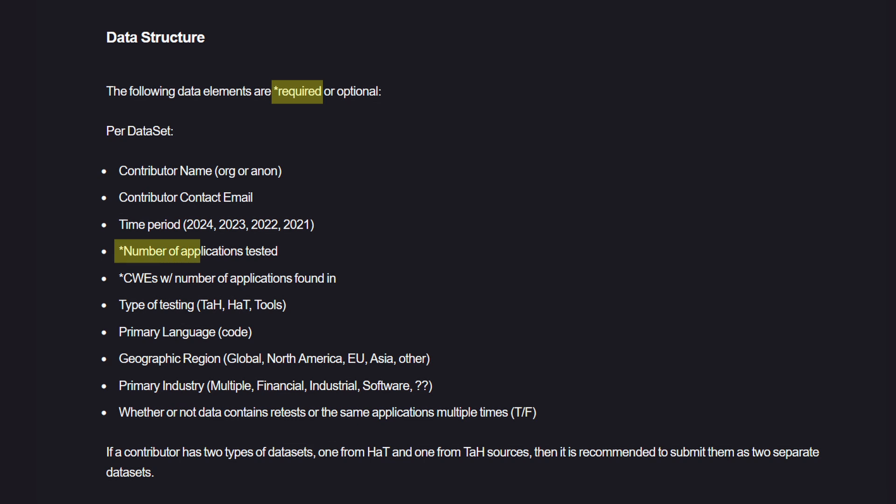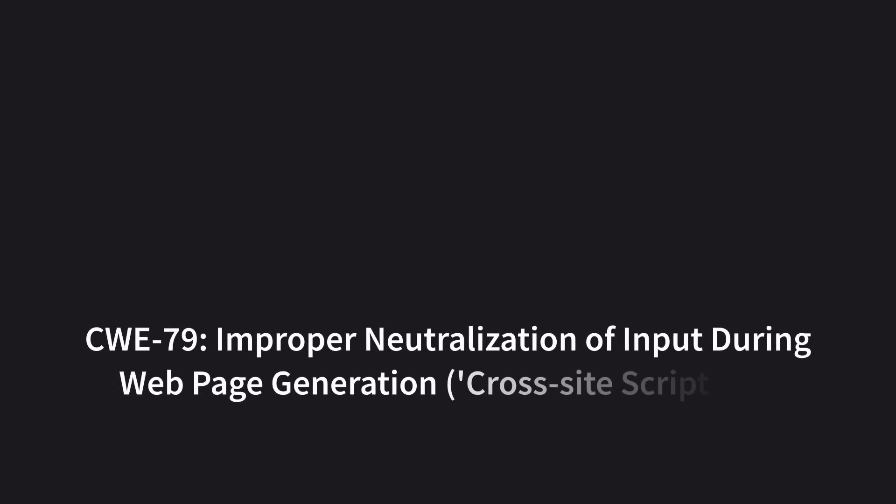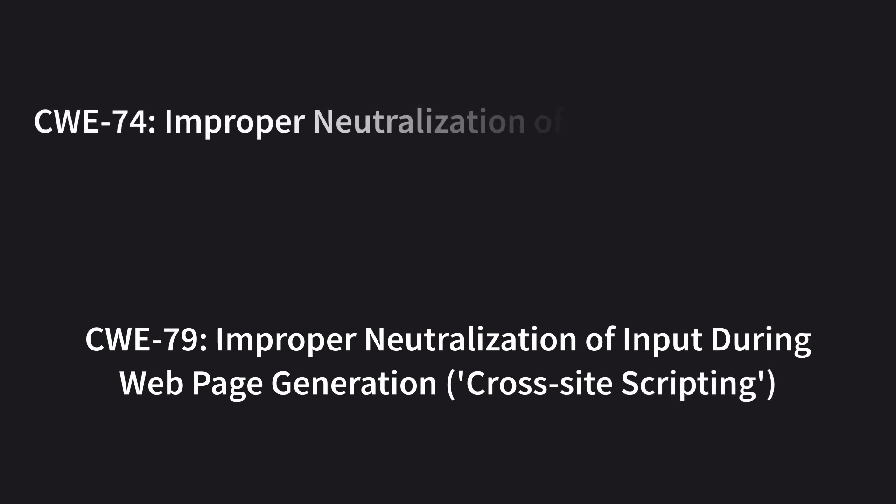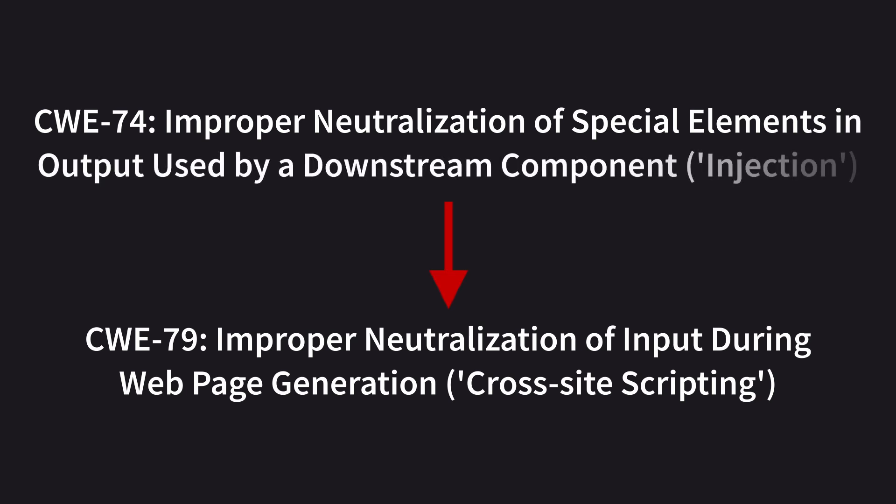If you remember, the initial data collection process uses statistics submitted by various vendors, including pen testing companies, vulnerability scanning companies, and bug bounty platforms. As I stated in the previous video, none of this data has anything that can be used to calculate the risk posed. The data submitted just needs to include the number of applications tested and the CWEs with the number of applications they were found in. It's important to reiterate that CWEs do not have risk data — they are Common Weakness Enumerations, effectively a taxonomy of different weaknesses and their relationships. For example, CWE-79 is improper neutralization of input during web page generation, cross-site scripting, which is a child of CWE-74, improper neutralization of special elements in output used by a downstream component, injection. CWE-79 has children of its own, covering a few variants of XSS. None of these CWEs have risk data attached.